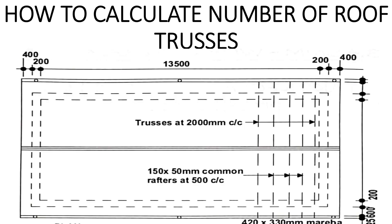Now let's look at this plan. This is a pitched roof plan. We have the length of the house. The projection is 200mm for the wall, and then 13,500mm is the length from this point up to this point. On the other side we have 200mm for the wall and 400mm for the projection. The trusses run on the longer side, so we are only interested in the length — not the width of the building.